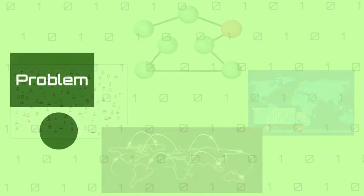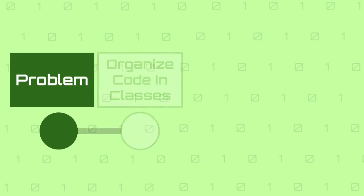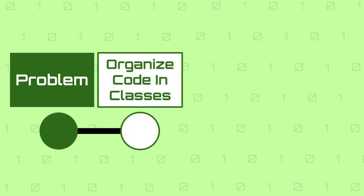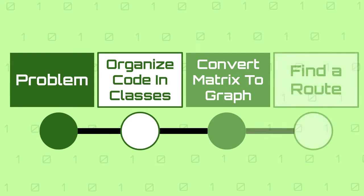Here is how the video is going to be organized. First I will explain the problem that we will be solving using a data structure. Next we will see how we are going to organize the code in classes and methods. Next we will see how you can convert a matrix into a graph data structure, and last we will see how to write an algorithm that will use the previously created graph to find the route to the destination for the delivery truck.